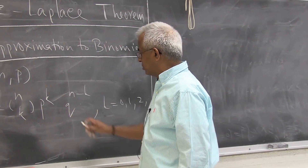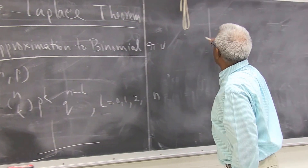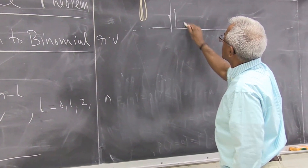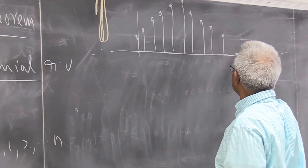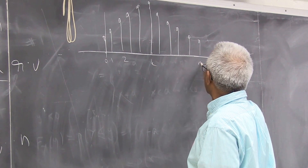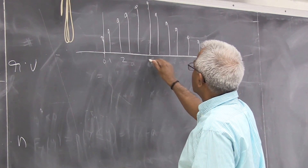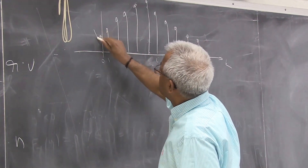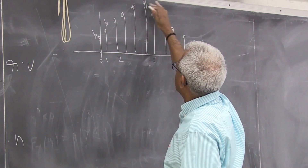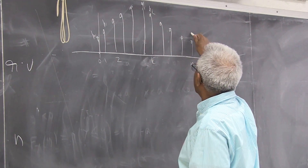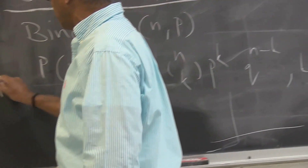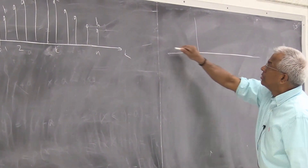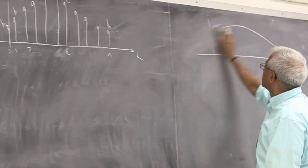So n and p are the two parameters, and q is 1 minus p. If you plot this, it has a shape where the values go from 0 up to n, with probabilities p0, p1, pk, up to pn. On the other hand, a Gaussian looks like a bell-shaped curve — this is a Gaussian density function.